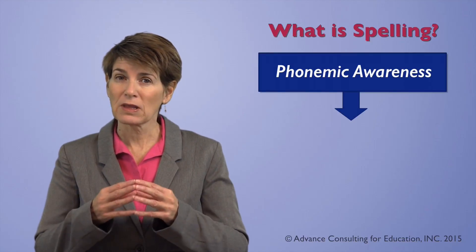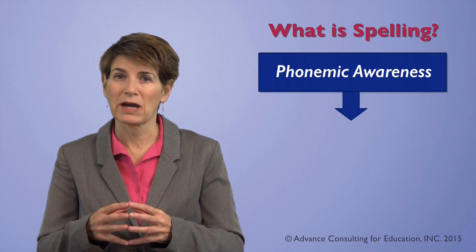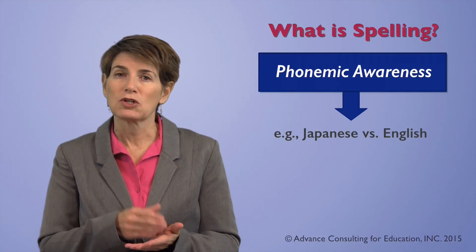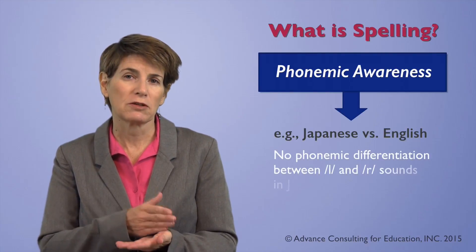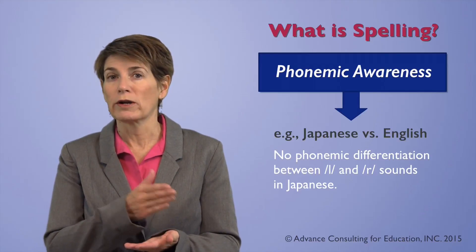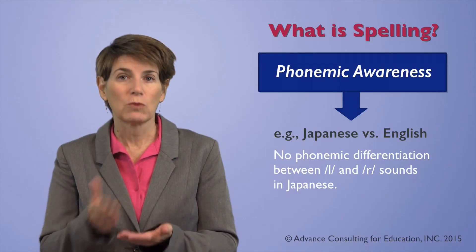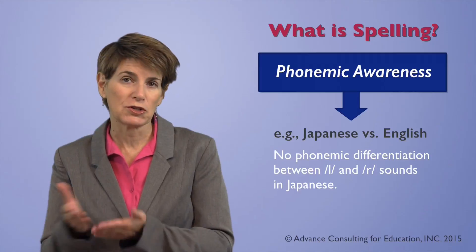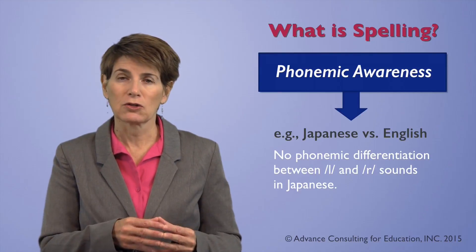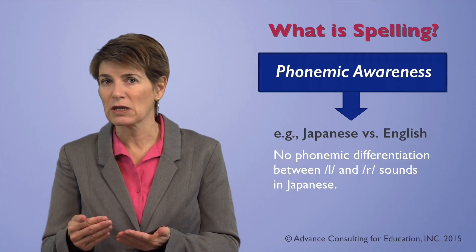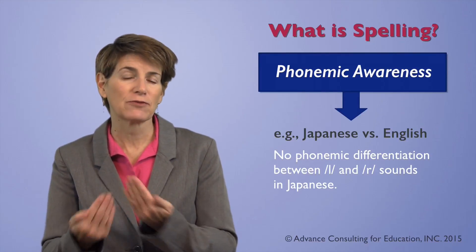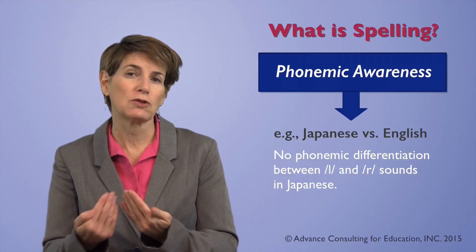A classic example is the difference between Japanese and English. In Japanese there is no phonemic differentiation between an L sound and an R sound. But in English we do have this differentiation. So many Japanese students of English have a great deal of trouble spelling words like 'light' versus 'right' because they actually can't differentiate those two phonemes.